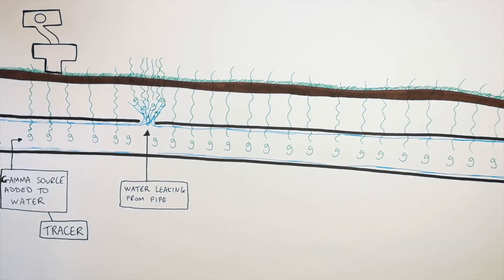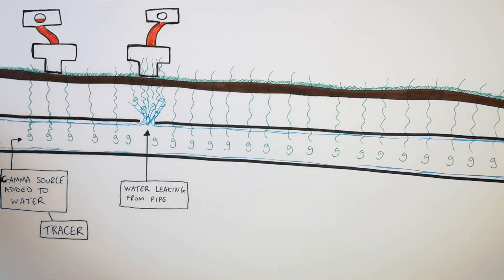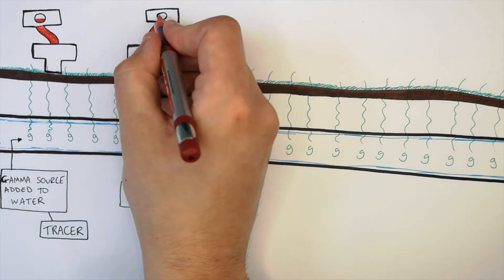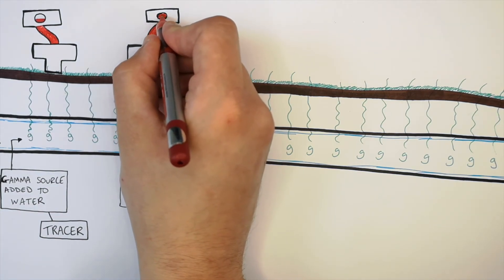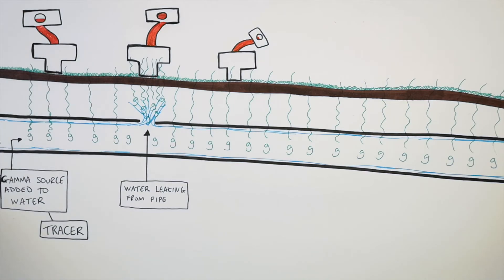Someone's going to come along with a Geiger-Müller tube and a counter to measure the count rate at different points along the pipe. They're going to measure the count rate and find some radioactivity, then move along. Just above where the leak is, the Geiger-Müller tube will measure a higher activity. Then as they move along, they'll see a lower count rate. So where there is the highest count rate, that is where the leak most likely is, because that's where the gamma source is collecting. Gamma radiation is used because it can penetrate the ground, the pipe, and the water to reach the Geiger-Müller tube.